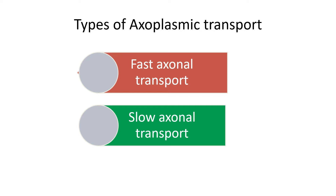There is a difference in the transport mechanism for different substances. Organelles such as mitochondria are transported relatively rapidly, whereas proteins dissolved in the cytoplasm are moved slowly by slow axonal transport.